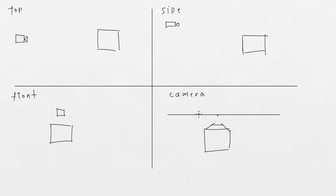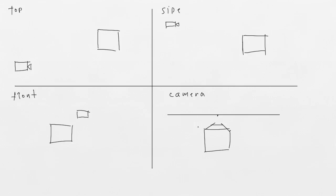Software has controls for cameras — we can move it left and right, up and down, forward, backward, zoom in, zoom out, and tilt. Let's see what happens when we move the camera to the right. We can see it from the top view — move it to the right. If we move the camera to the right, the object will move to the left in the camera view.